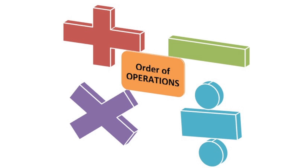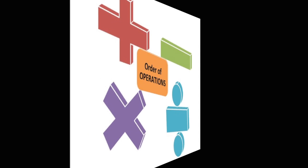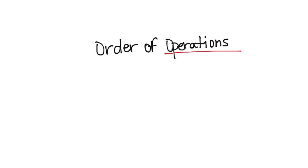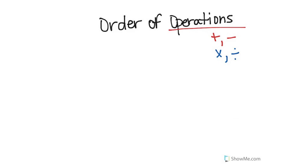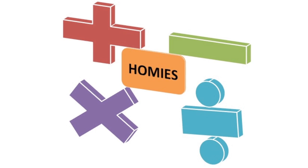Before we move into the lesson let's quickly discuss the title. Operations means the four math symbols — the four math operations that you use, which are addition, subtraction, multiplication, and division. Now guys, you're going to hear me refer to these as homies because they have each other's back.